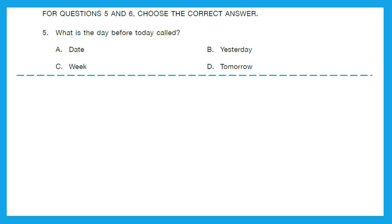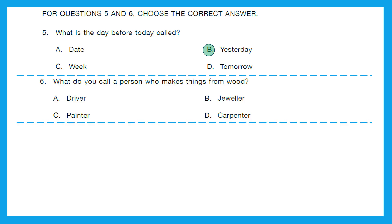For questions 5 and 6, choose the correct answer. Question 5: what is the day before today called? Very easy — it's called yesterday. Option B is the right answer. Question 6: what do you call a person who makes things from wood? A person who makes things from wood is called a carpenter. Option D is the right answer.